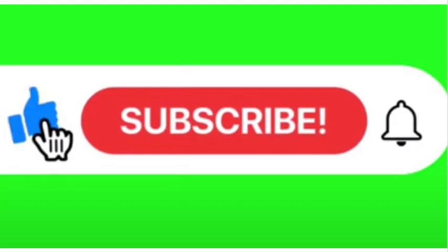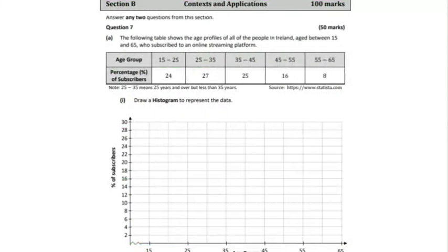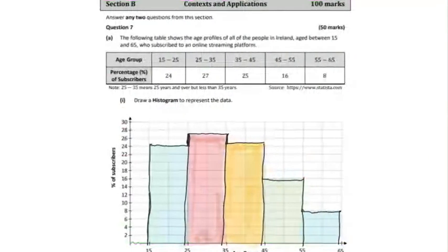Hello and welcome to Maths Plus. Today we're covering the 2021 Leaving Cert Paper 2 Question 7 with statistics. As you can see, we have a set of data for age groups and percentage of subscribers. We need to make a bar chart to represent the data. This is very straightforward. As you can see, the majority of